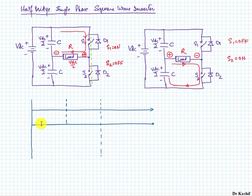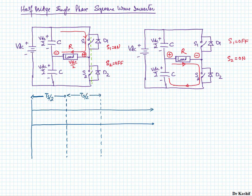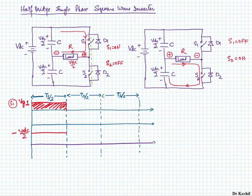We can now draw the waveforms for this circuit. The applied voltage is a constant DC. The switches are being turned on and off, and we assume the turn-on time of switch S1 is exactly equal to the turn-on time of switch S2, though both switches are never on at the same time. We divide the period into two intervals of Ts/2 each: S1 is turned on in the first interval and S2 in the second interval.